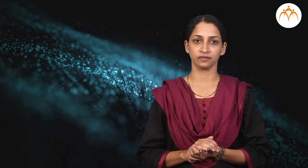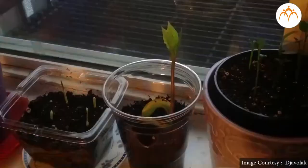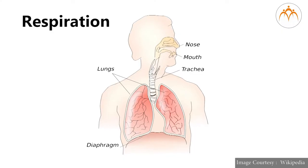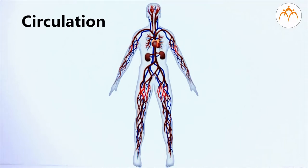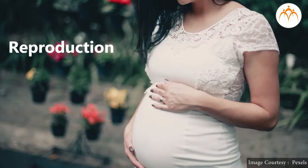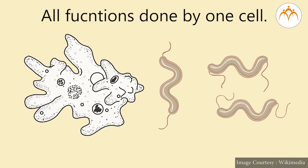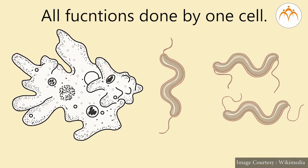Animals having many cells in their bodies are multicellular. All living organisms exhibit functions like growth, nutrition, respiration, circulation, reproduction, etc. In unicellular organisms, all these functions are done by only one cell.